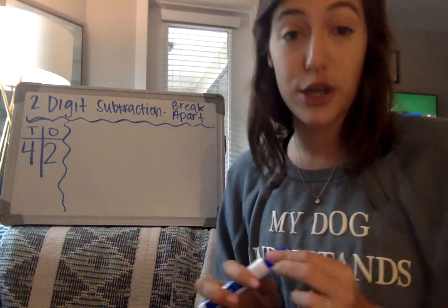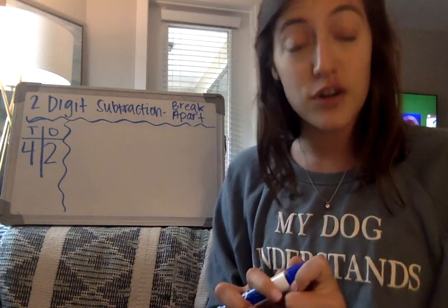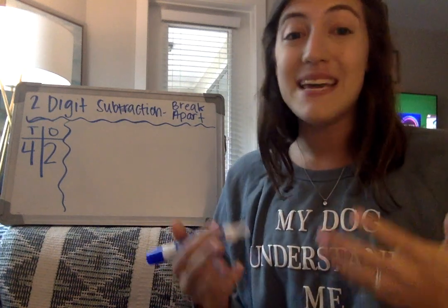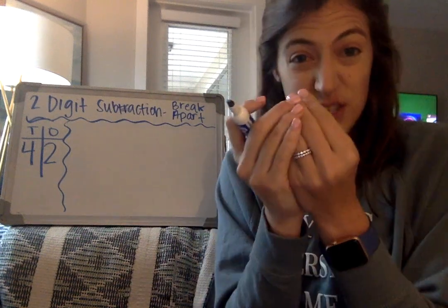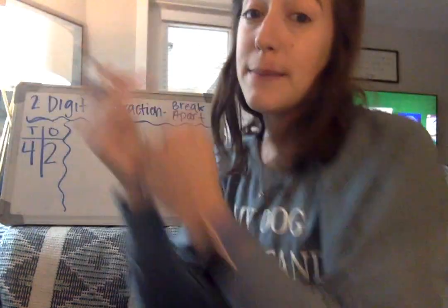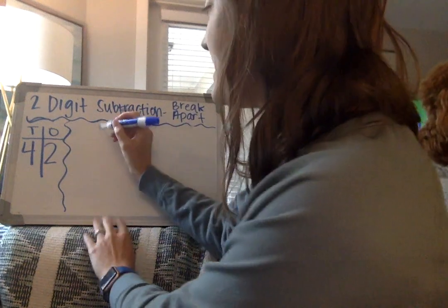So first, you pick your first number. Now we know that our first number has to be bigger because it's impossible to subtract a bigger number from a smaller number, but we could subtract a smaller number from a bigger number. So I'm going to pick a number, and I'm going to pick 68.